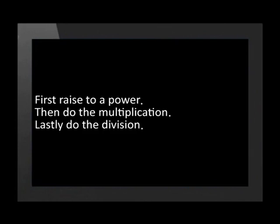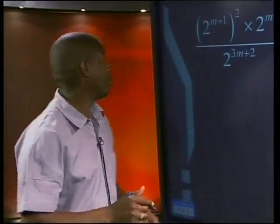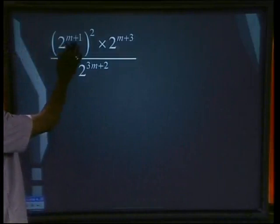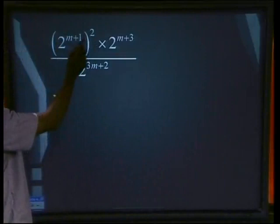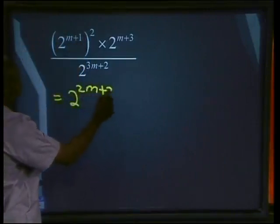Lastly, do the division, which is subtracting the exponents. Let us first examine the expression carefully. We have 2 to the power m plus 1 raised to the power 2. So let's do that first. That will give us 2 to the power 2m plus 2.